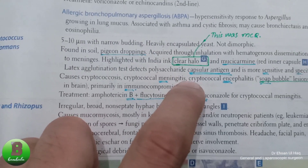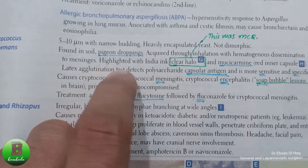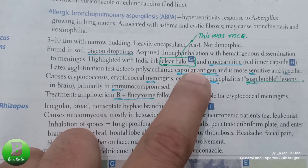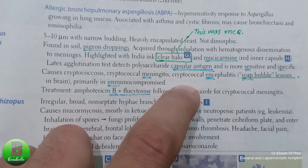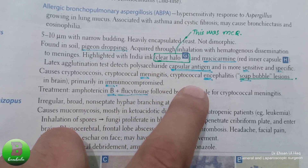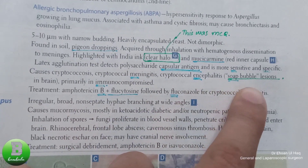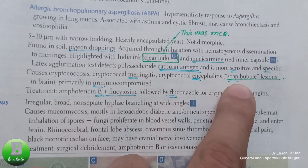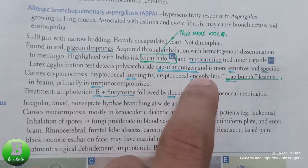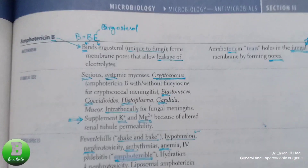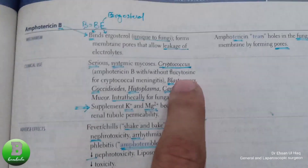Cryptococcus neoformans is an encapsulated yeast. Diagnosis uses latex agglutination, which detects the polysaccharide capsule antigen. It is more common in immunocompromised patients and produces soap bubble lesions. It causes meningitis and encephalitis.